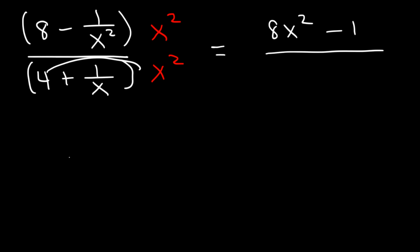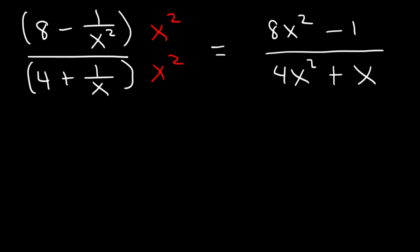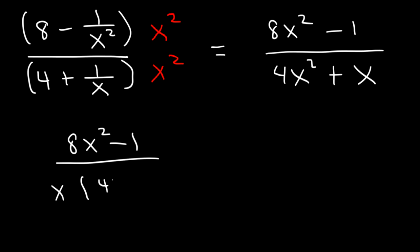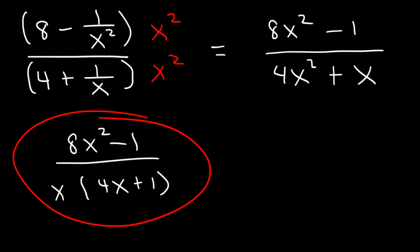And then we're going to have 4x². Then 1 over x times x² is simply x. So that's the simplified form. In the denominator, we can factor out an x if we want to, leaving behind 4x plus 1. So the final form is 8x² minus 1 over x(4x plus 1).